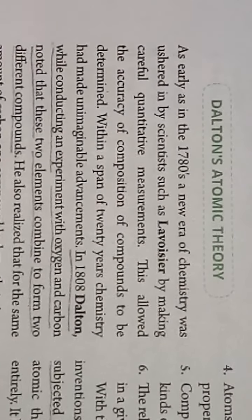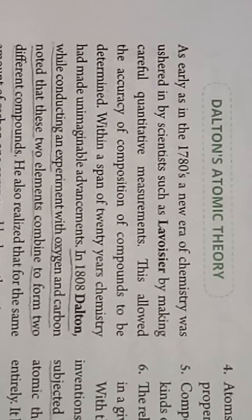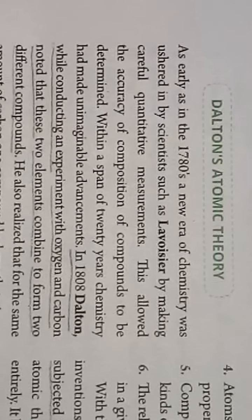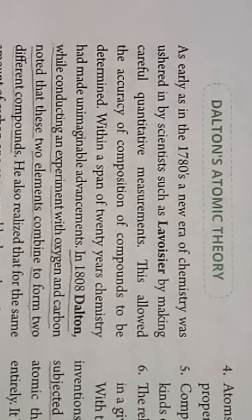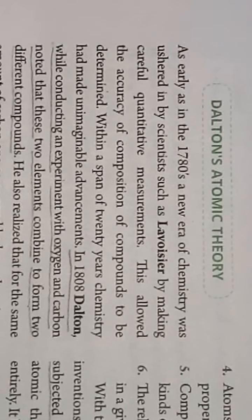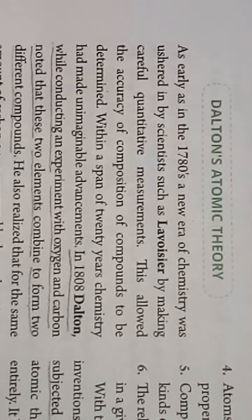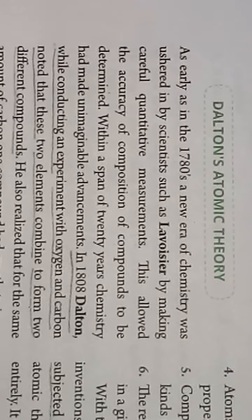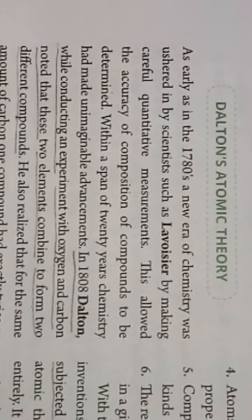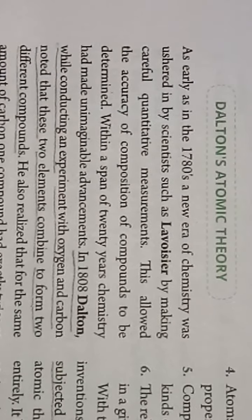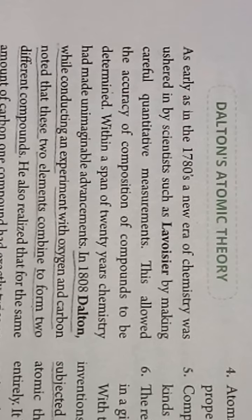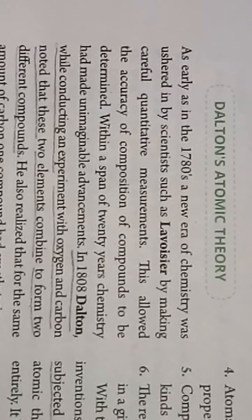In the early age, in the 1780s, a new era of chemistry was ushered in by chemist scientists such as Lavoisier, by making careful quantitative measurements. This allowed the accuracy of composition of compounds to be determined. Within a span of 20 years, chemistry had made unimaginable advancements.